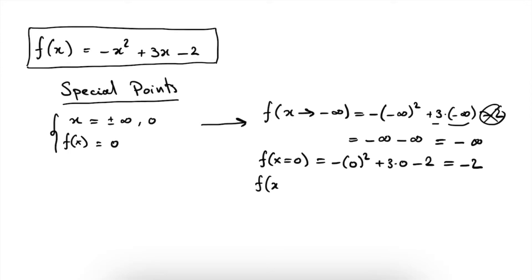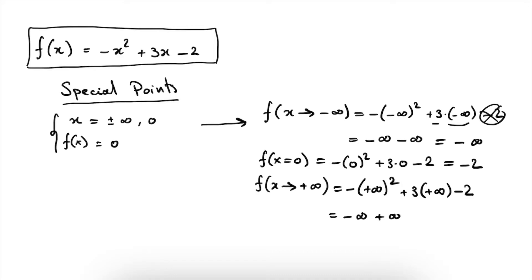Let's look at the function value when x becomes a very large positive number. We have minus plus infinity squared plus 3 times plus infinity minus 2. In this case, we actually get minus infinity plus infinity, and the minus 2 is irrelevant. At this point we cannot conclude anything because we have the special case of minus infinity and plus infinity — this is not defined. So we have to leave this matter here, but we will be able to figure this out later on.